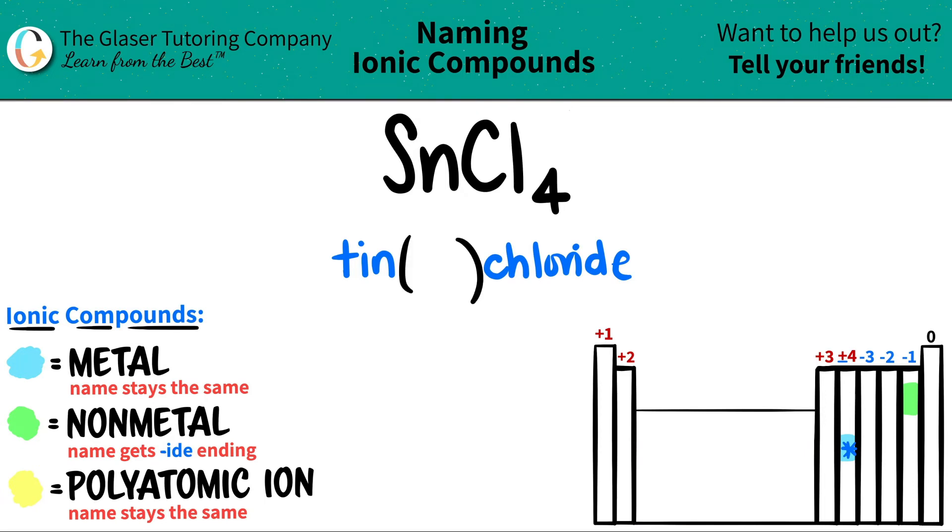But what is the Roman numeral? Well, this is pretty easy to find out. We're going to take our numbers, the subscripts on the bottom and crisscross them back up to find the charges. The Roman numeral is always the charge of the metal. So there was one Sn. There's four chlorines.